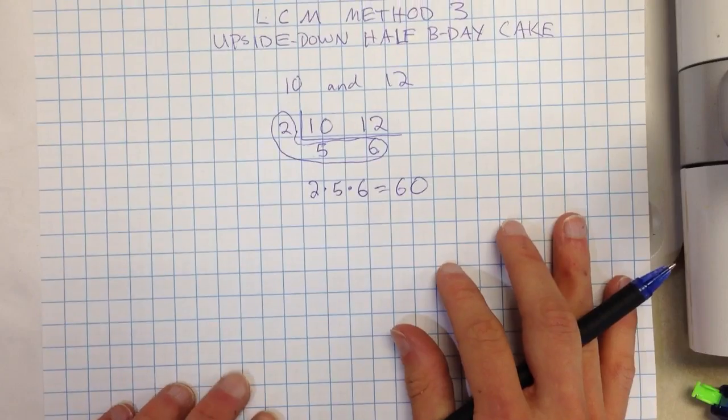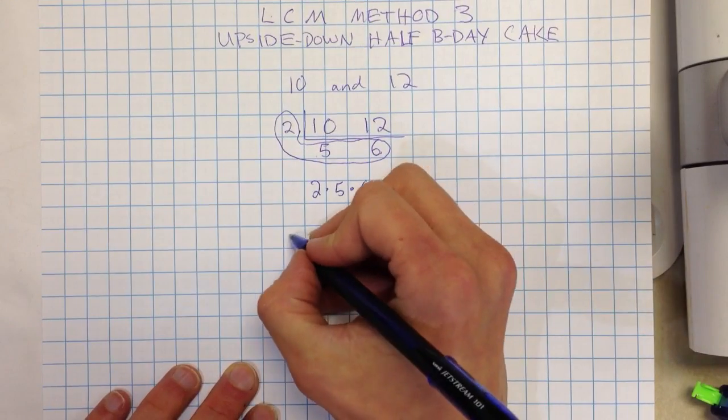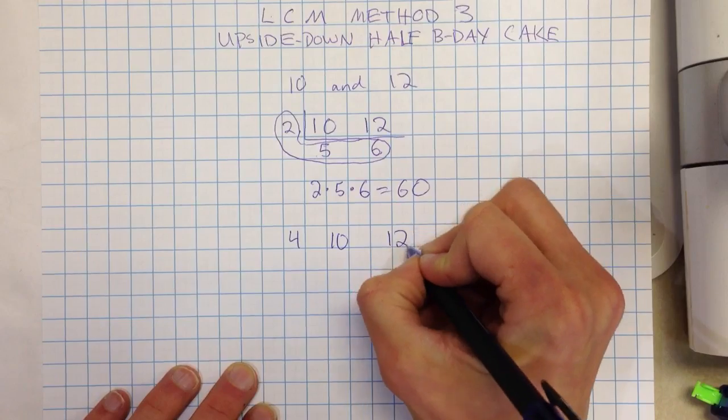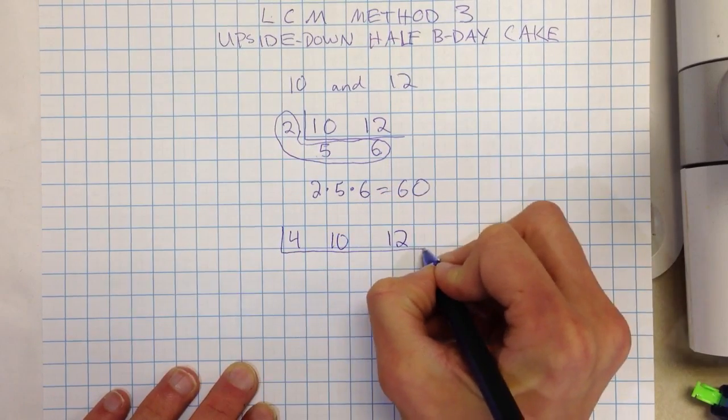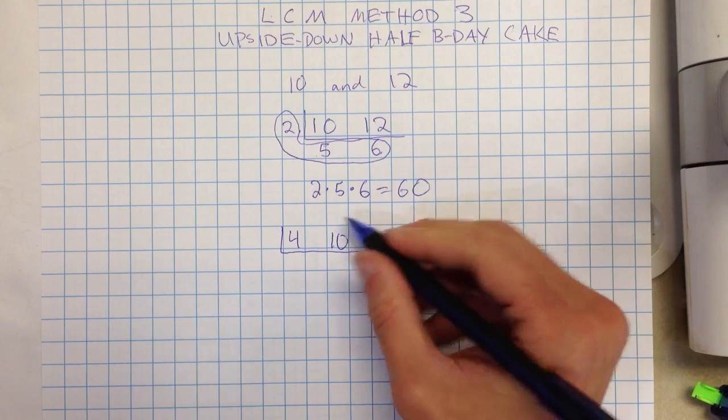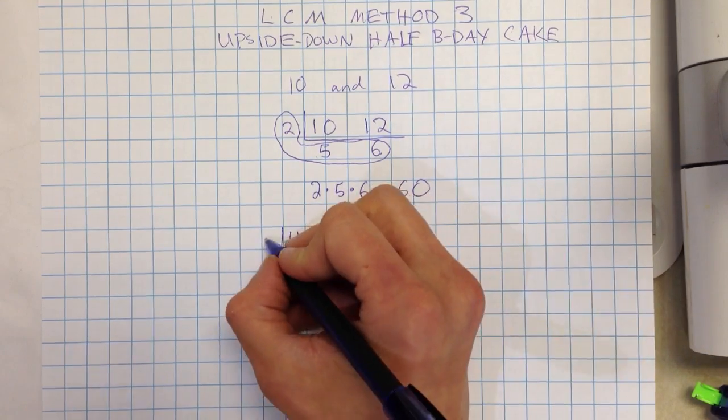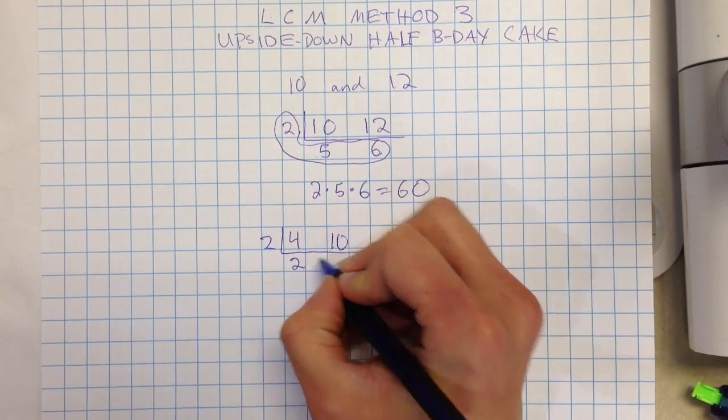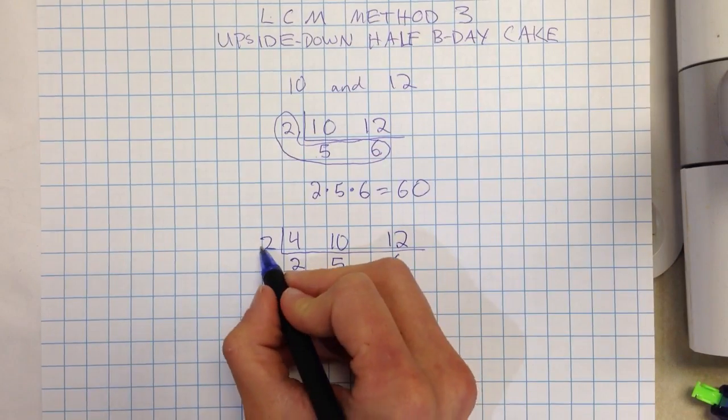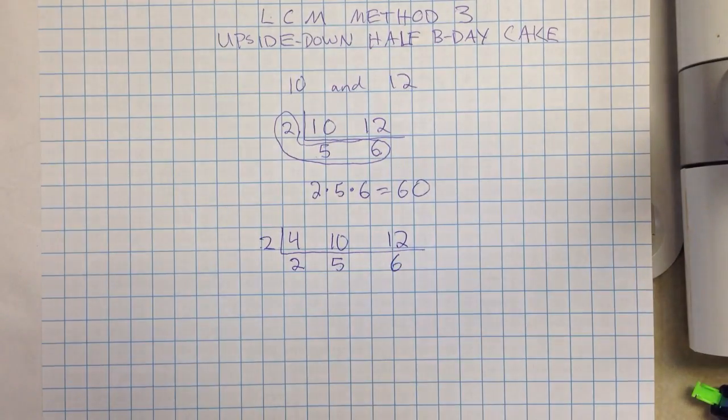The example we did in class today was let's say I had 4, 10, and 12. Now if I was finding the LCM, it's actually going to be 60 for these numbers. But if I used the half birthday cake, 2, 5, and 6, and I did 2 times 2 times 5 times 6, I would get 120.